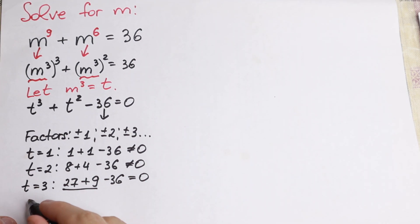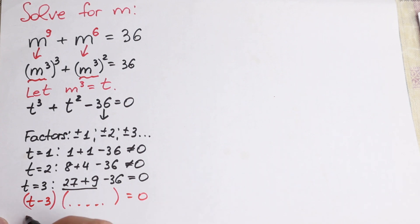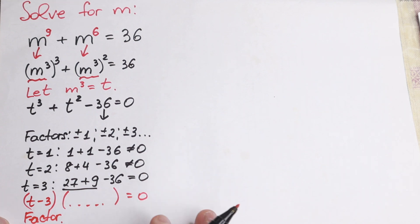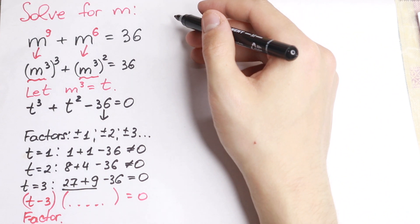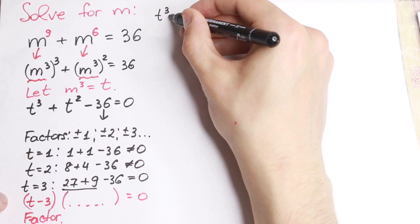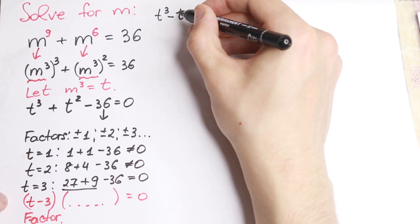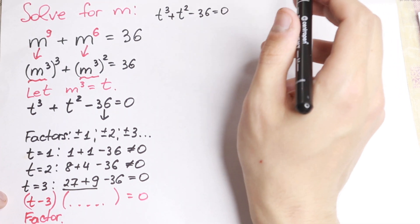So t minus 3 will be our factor, and we need to find the other parenthesis, equal to 0. This is our one really good factor and we need to find the other parenthesis. How can we find it? I want to show you a really good approach. I write this expression on the right-hand side and let's find the other factor. We have t cubed plus t squared minus 36 equal to 0. How can we find the factor?